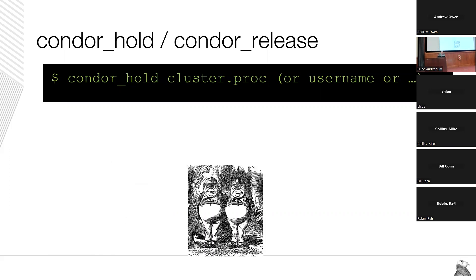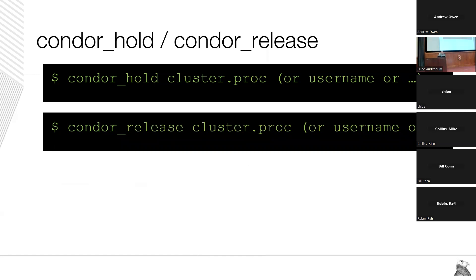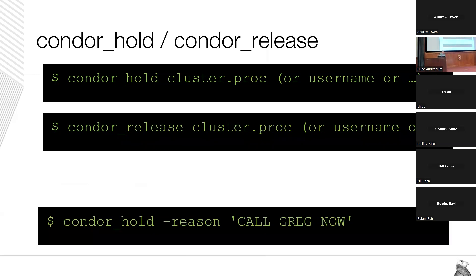The second pair is condor_hold and condor_release. Unlike suspend and resume, when a formerly running job is held, it's evicted and removed from the execute point and placed in a held state where it can't be restarted until you run condor_release again. These take the same options as always. Just like condor_rm, condor_hold takes a --reason, and I strongly encourage admins to always use the --reason option when putting someone else's jobs on hold — or even your own — so you remember why you did it.